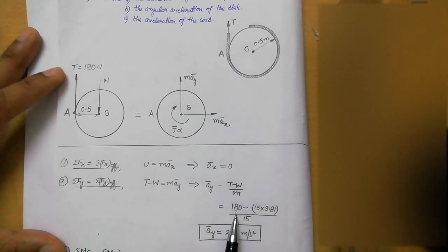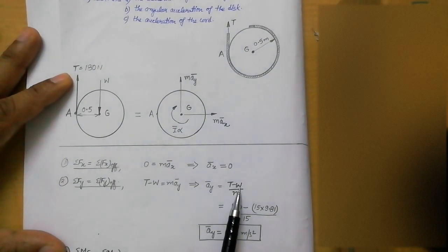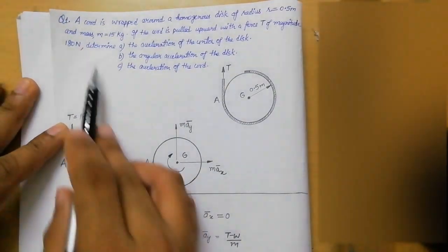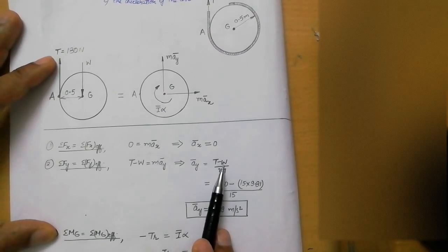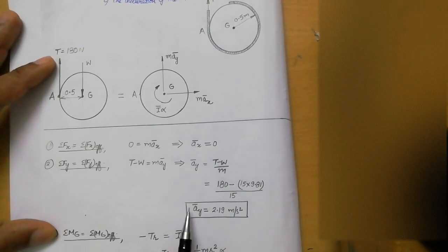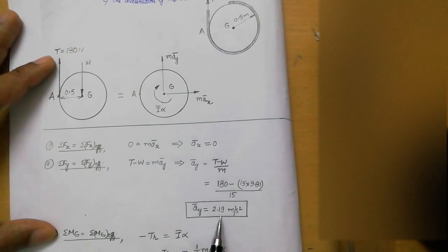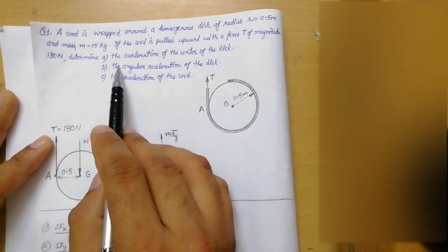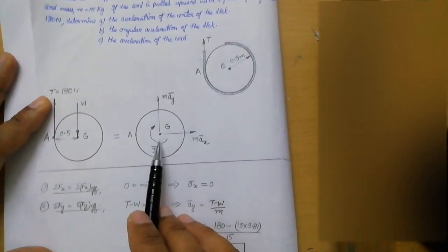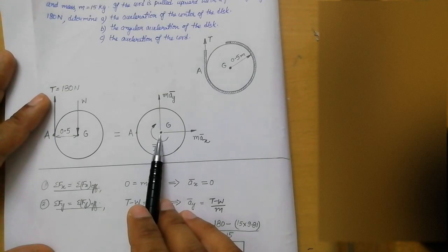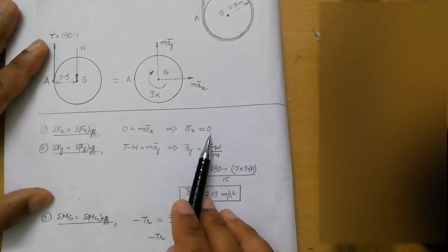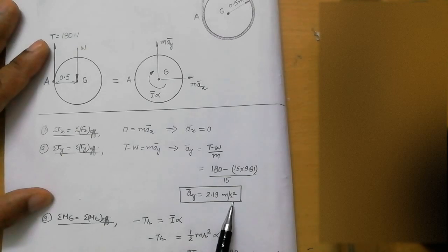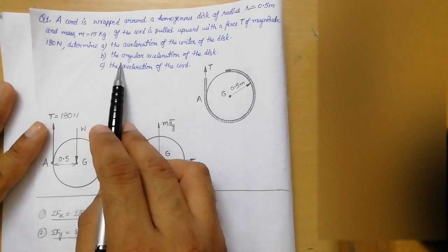We have the value of T equal to 180 newton and the weight W equals mass times g, with mass equal to 15 kilogram. Substituting these values into T minus W equals m·ay and dividing by m equal to 15, we get ay equal to 2.19 meters per second squared. So the answer to the first part — acceleration of the center of the disk — is: ax equals 0 and ay equals 2.19 meters per second squared.